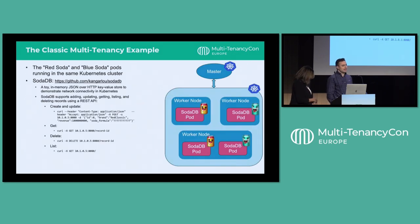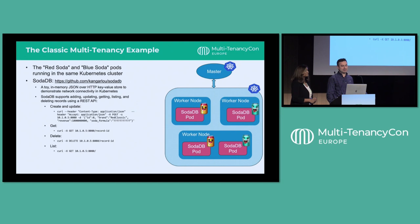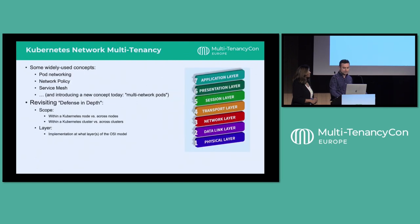The classic example of multi-tenancy is Coke and Pepsi running on the same shared infrastructure. For this talk, I'll use the hypothetical example of the red soda company and blue soda company running on the same cluster, referencing an application called SodaDB — available on GitHub — to illustrate these concepts. The three main ways to provide network multi-tenancy in Kubernetes are pod networking, network policy, and service mesh.